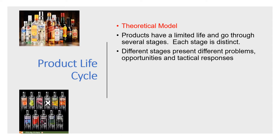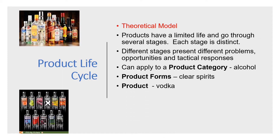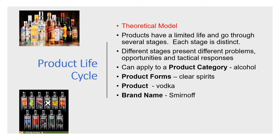Each stage brings different problems, opportunities, and a different tactical response, so it helps to know what stage of the product life cycle your product is at. When talking about PLC it could be about a category - so it could be alcohol, or a form like clear spirits, a product like vodka, or even a specific brand. For example, gin was certainly in decline but now it's come back very strongly.